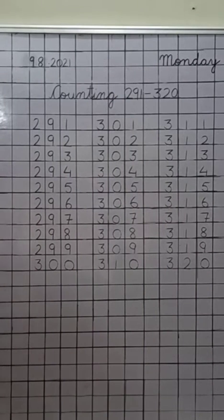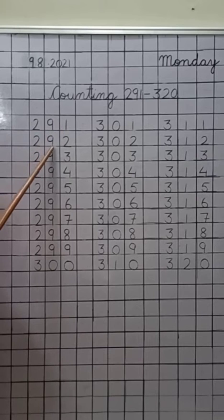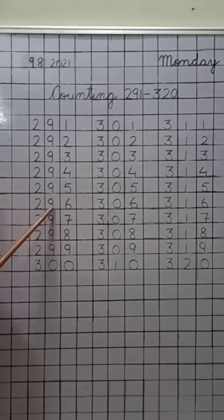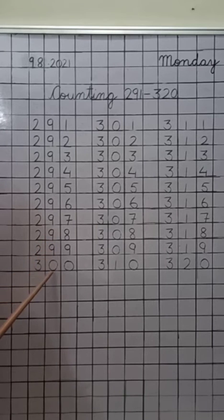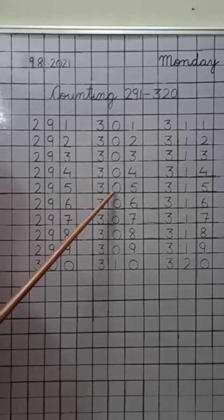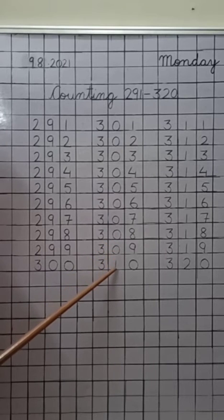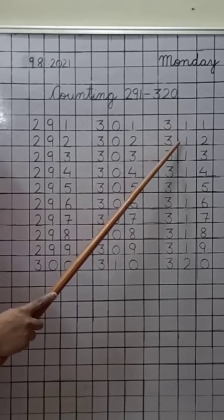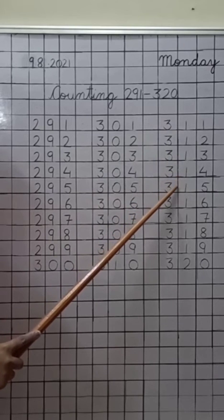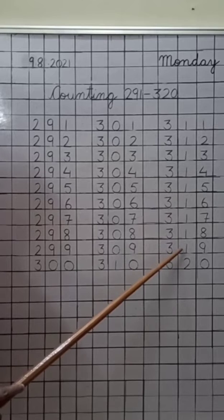Now let us revise once more. Now you all will speak after me. Okay? 291, 292, 293, 294, 295, 296, 297, 298, 299, 300, 301, 302, 303, 304, 305, 306, 307, 308, 309, 310, 311, 312, 313, 314, 315, 316, 317, 318, 319, 320.